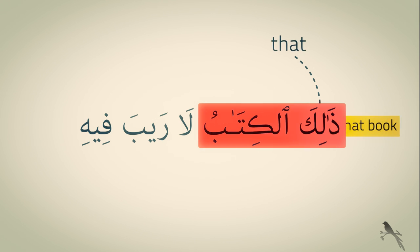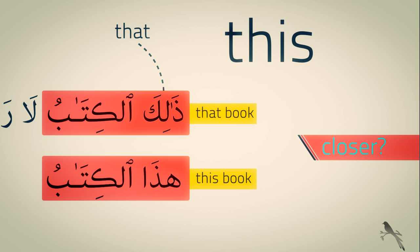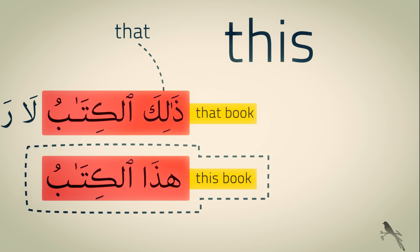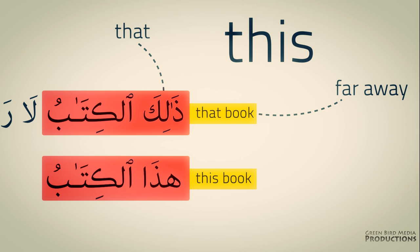That. That book. Now, when I say 'this' as opposed to saying 'that,' which one is closer? Is this book closer or that book closer? This book is closer. That book is far away. Because 'that,' a pointing word, is for distance. But when something is closer, you don't say 'that,' you say 'this.'